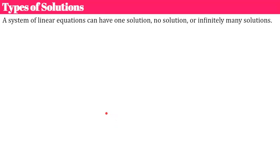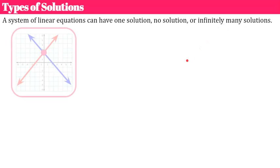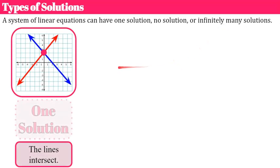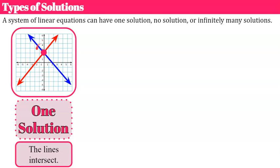Here are the different types of solutions. A system of linear equations can have one solution, no solution, or infinitely many solutions. Graphically, if we have one solution, our lines would intersect. The point of intersection is your solution — they can only intersect in one point. They're straight lines, so they're not going to come back and intersect again. When lines intersect, we have one solution.